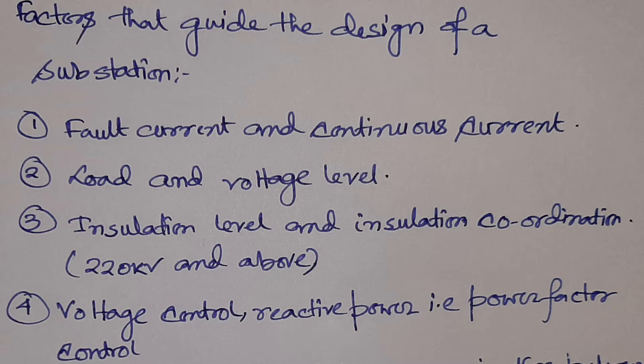There are several factors that guide the design of a substation. Number one is fault current and continuous current — these are two very important parts of a substation design. Then the load and the voltage level: depending on the load you need to select the transformer size, and depending on the power requirements the voltage levels are selected. For example, small-rated motors of rating less than 200 kW will be fed from a lower voltage level.